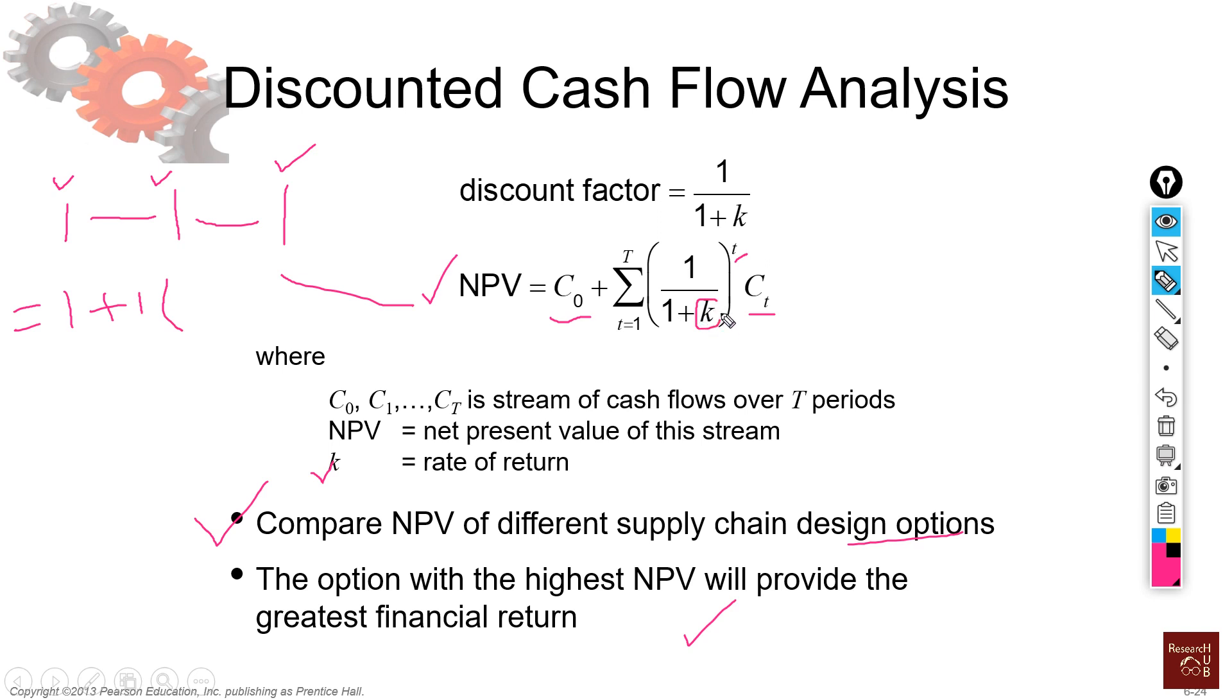So if my K is 10%, that would mean it's 0.10. That would mean 1 plus K would be 1.1. So actually my discount factor is now 1 divided by 1.1. So that is about 0.91. 1 divided by 1.1 is about 0.91.